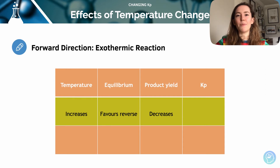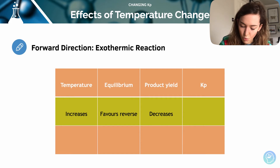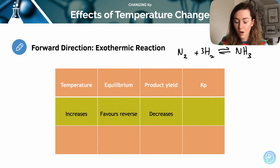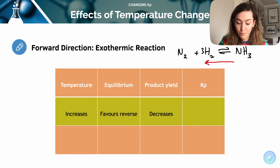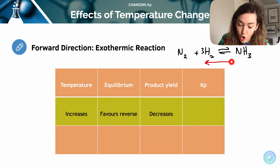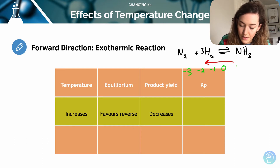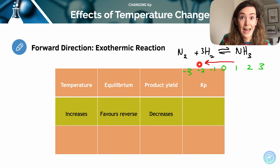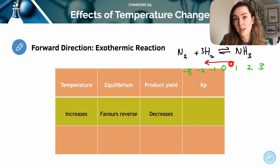Now how does that affect Kp? Well, Kp is almost like a number line. Let's just use the Haber process as an example. If we are shifting the equilibrium backwards because I've increased the temperature and the forward reaction is exothermic, then the value of Kp is going to go down. I like to think of it a bit like a number line — imagine smack in the middle is zero. So if we shift backwards, the value of Kp in green is going to go down. But if we shifted forwards, the value of Kp is going to increase.